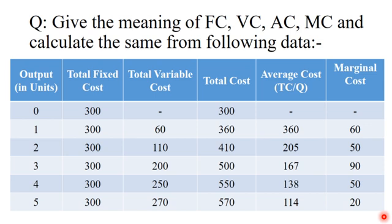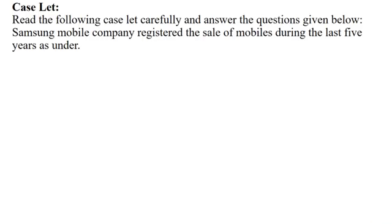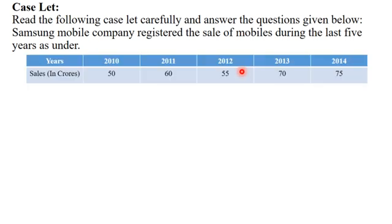We will move to the next question, which is about 15 marks — a case study. For example, Samsung Mobile registered the sale of mobiles during the last 5 years as given. On the basis of this data, you have to answer the following 3 questions: first, what is demand forecasting; second, estimate the demand for the next 3 years; third, explain the importance of demand forecasting.